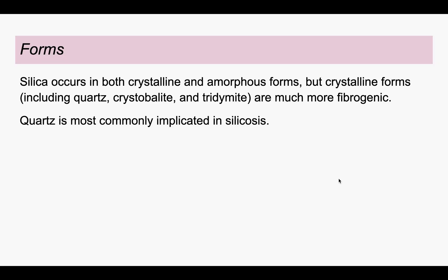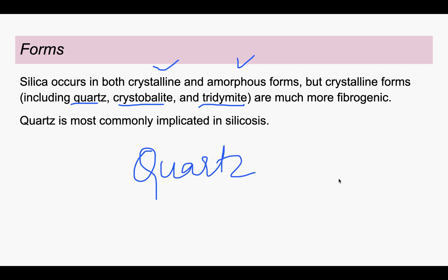There are two forms of silica: the crystalline form and the amorphous form. The crystalline form is the most fibrogenic form, not the amorphous form. The crystalline form includes quartz, cristobalite, and tridymite. Out of these, quartz is the one most commonly implicated in silicosis.